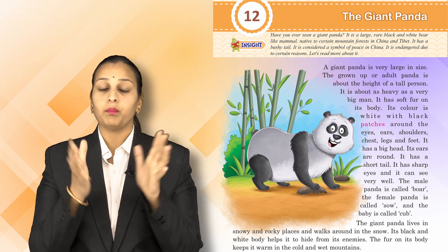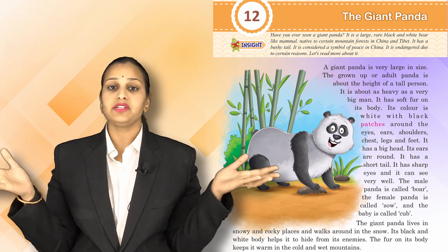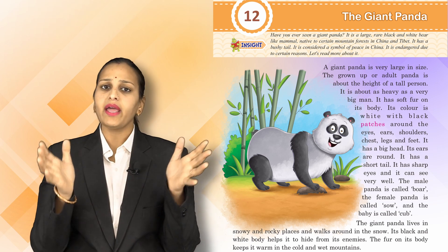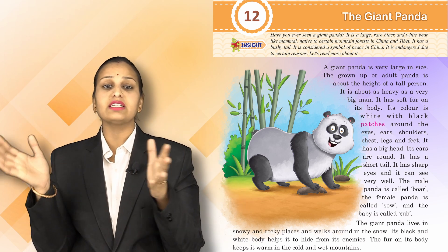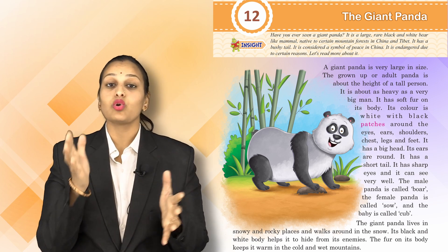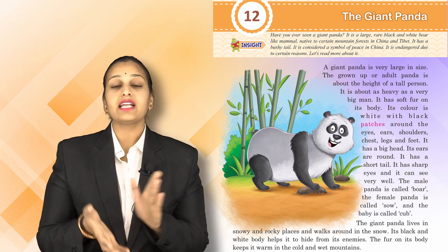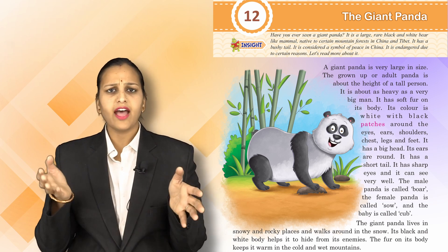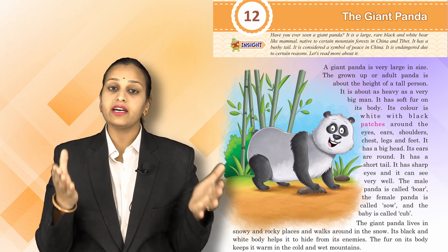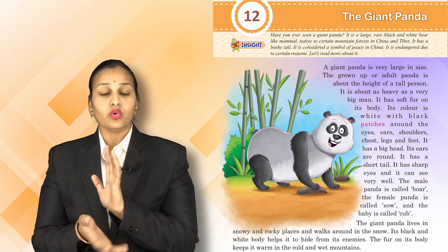The male panda is called a boar — B-O-A-R. The female panda is called a sow — S-O-W. Just like we say boy for male and girl for female, animals have these terms too. The baby panda is called a cub.